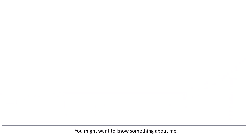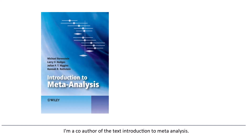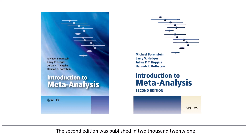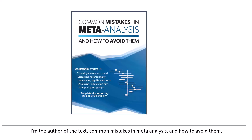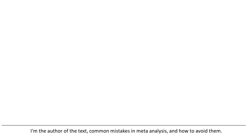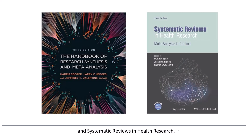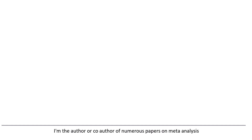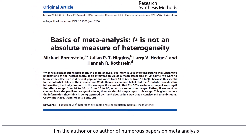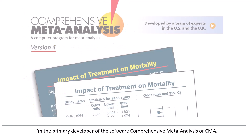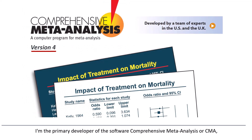You might want to know something about me. I'm a co-author of the text Introduction to Meta-Analysis. The first edition was published by Wiley in 2009 and became the best-selling text ever published on meta-analysis; the second edition was published in 2021. I'm the author of the text Common Mistakes in Meta-Analysis and How to Avoid Them. I've contributed chapters to various books, including the Handbook of Research Synthesis and Meta-Analysis and Systematic Reviews in Health Research. I'm the author or co-author of numerous papers on meta-analysis, and I'm the primary developer of the software Comprehensive Meta-Analysis, or CMA, initially published in 2000 and now in its fourth major release.